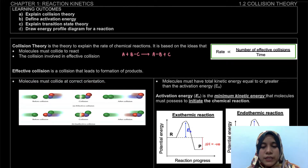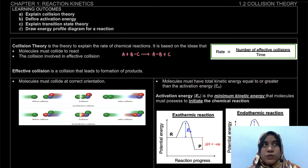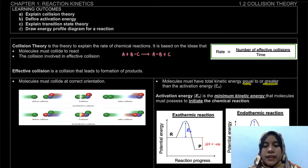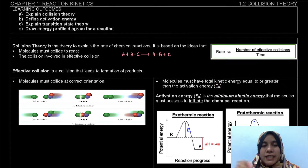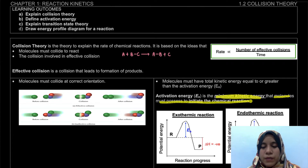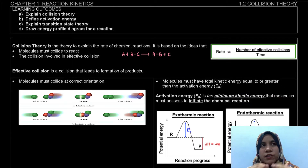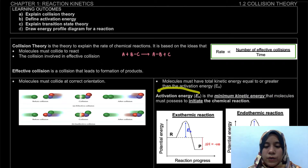The second requirement is that the colliding molecules must have total kinetic energy equal to or greater than the activation energy. I'm going to denote activation energy as Ea. Activation energy is the minimum kinetic energy that a molecule must possess to initiate the chemical reaction — it is the minimum kinetic energy required to start the chemical reaction.